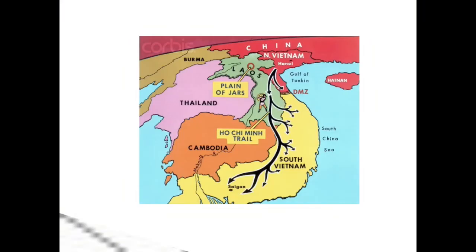As shown on the map, the NLF also used the Ho Chi Minh Trail — a supply route through the jungle of Vietnam, Laos and Cambodia. The NLF stayed close to the Americans so that they could not be bombed without the US killing their own men.